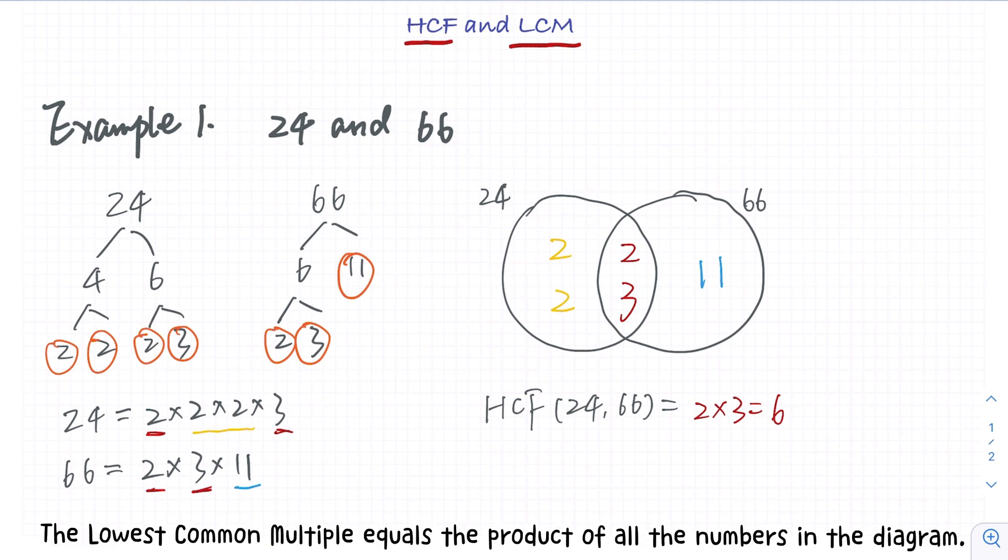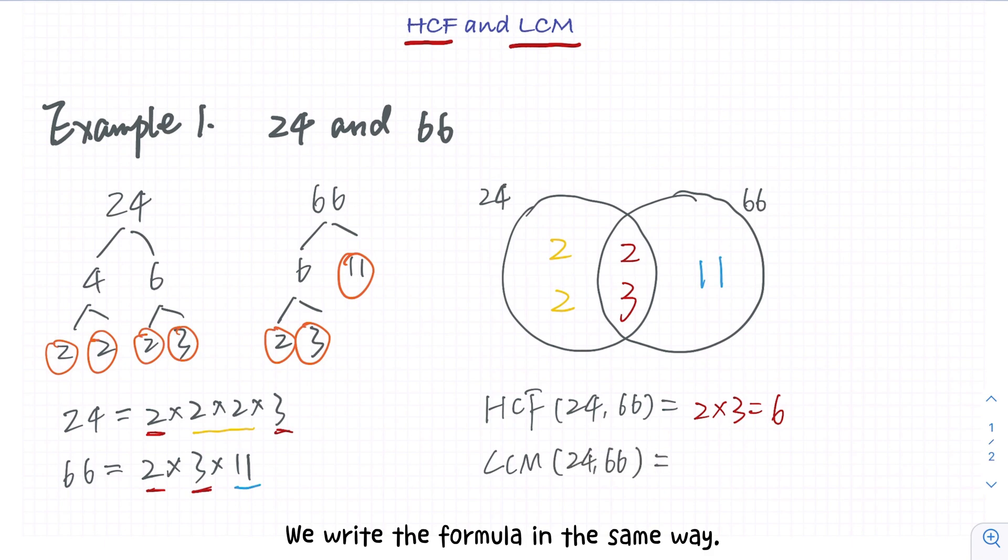The lowest common multiple equals the product of all the numbers in the diagram. We write the formula in the same way: 2 times 2 times 2 times 3 times 11 equals 264.